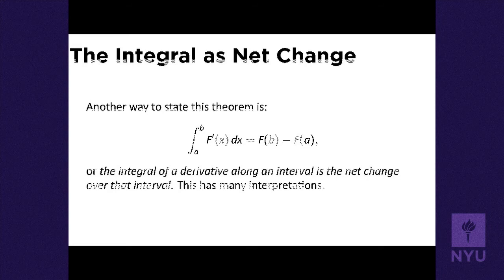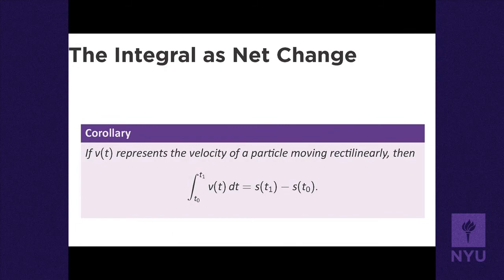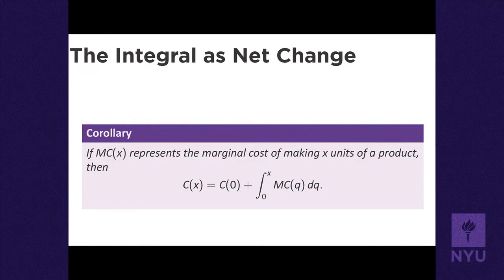Depending on context, different interpretations arise from the Fundamental Theorem. Integrating velocity (derivative of position) from T₀ to T₁ gives change in position — displacement. In economics, integrating marginal cost (derivative of total cost) gives change in cost: C(X) - C(0) = ∫₀ˣ C'(q)dq.